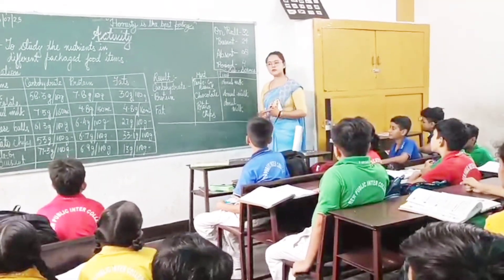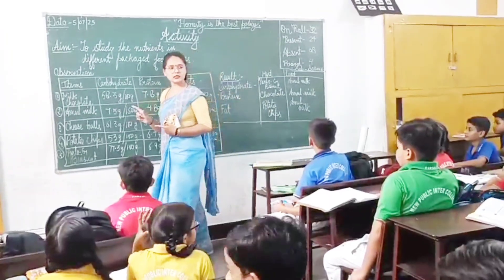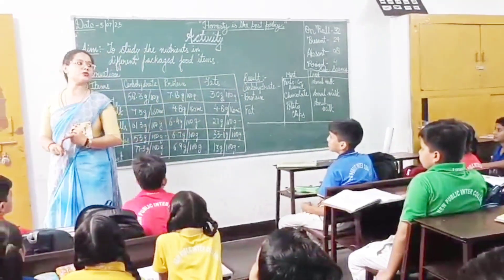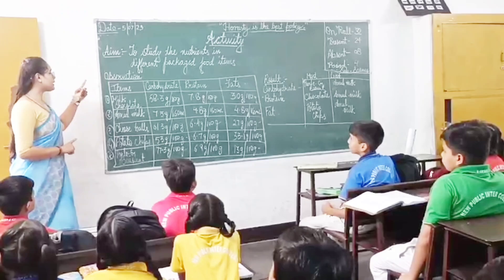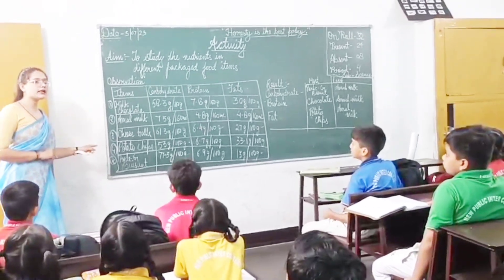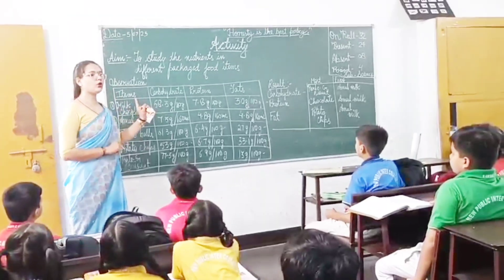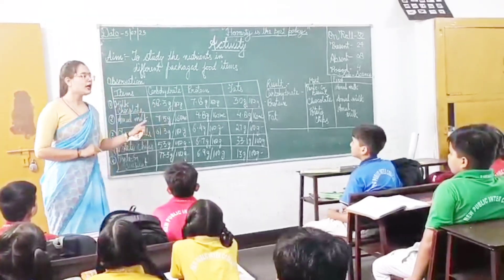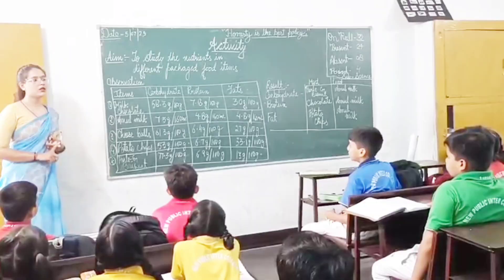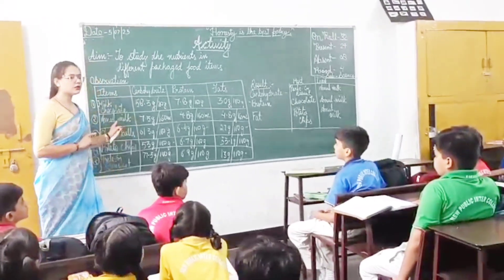So with the perspective of eating healthy, in comparison of fats, if we need to choose the healthy option among these items, that is Amul milk. And potato chips is least healthy here. So did you all compare the food items? Did you all learn something from this activity?